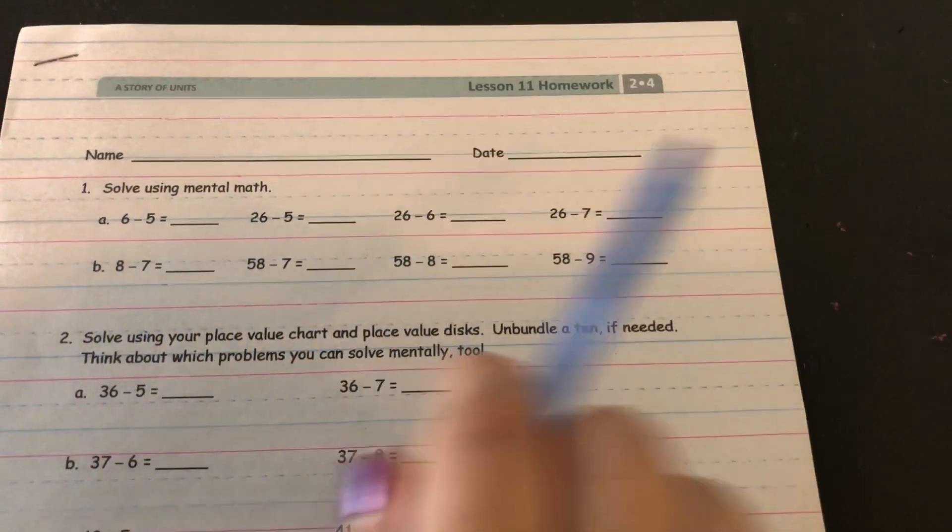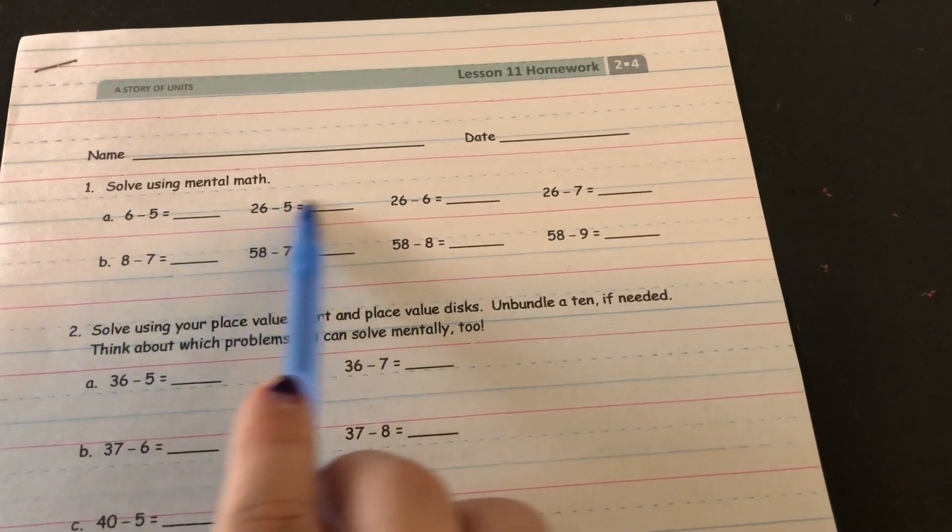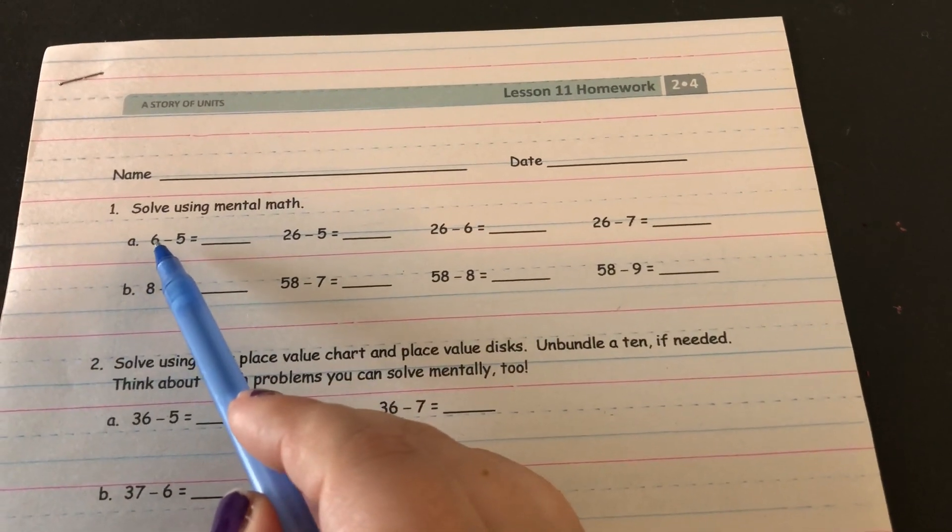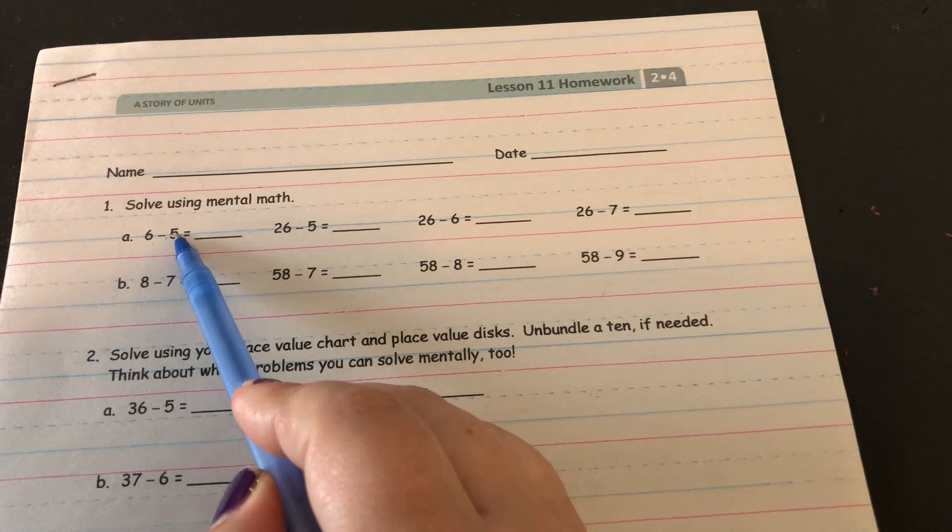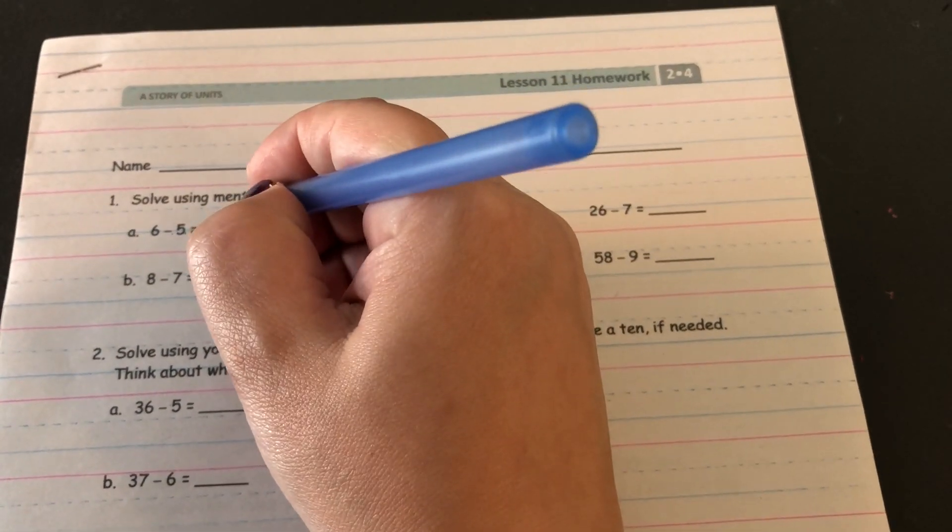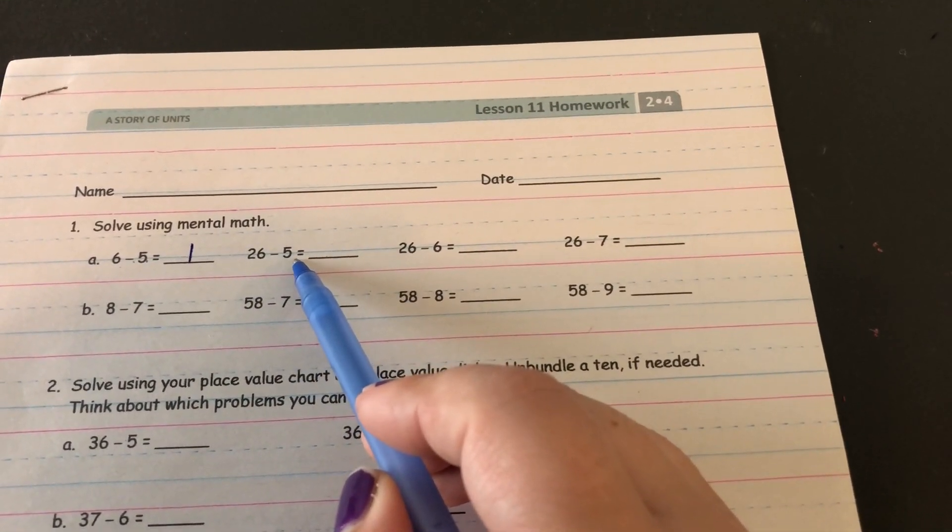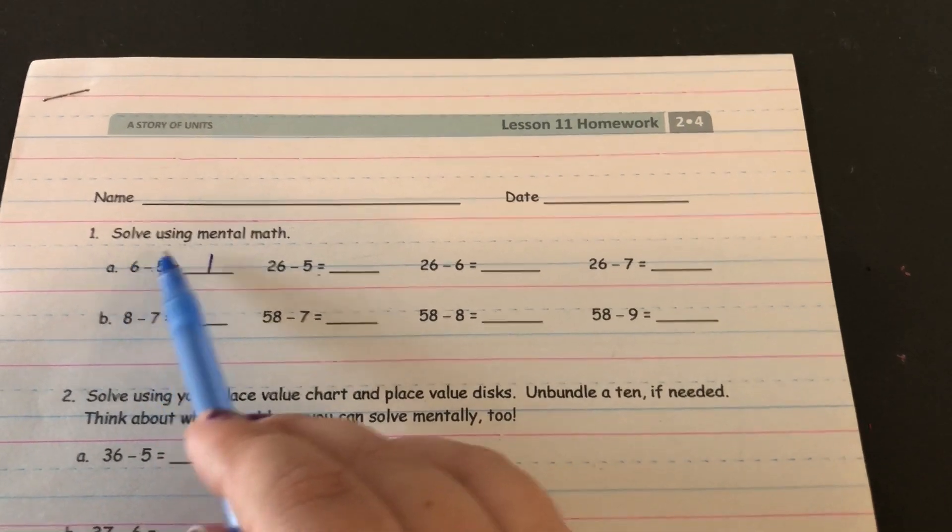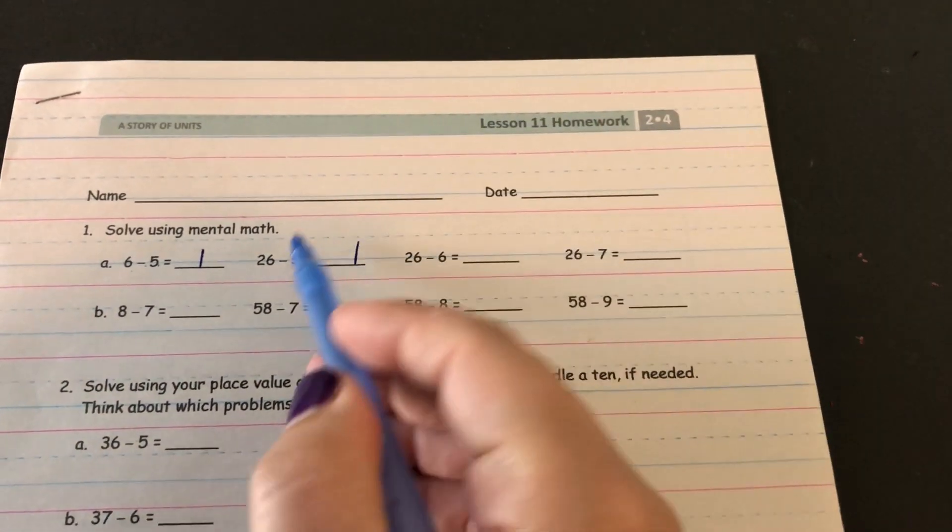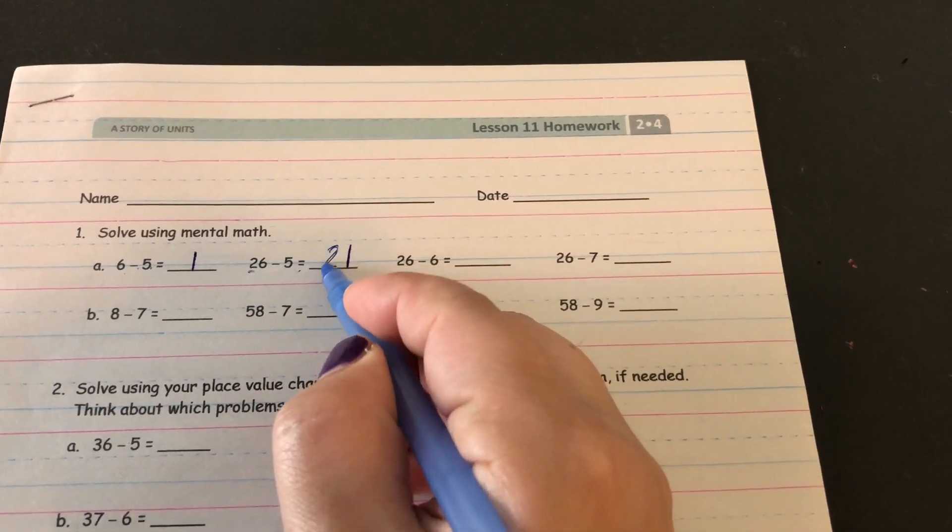The first part says to solve using mental math. So I'm going to go through just this first set with you. All right, well 6 minus 5. So this is something you can do in your head. 6 minus 5 is 1. Now it has 26 minus 5. Well we just solved 6 minus 5. 6 minus 5 gave us 1 and all we need to do is add these two tens back in to get 21.